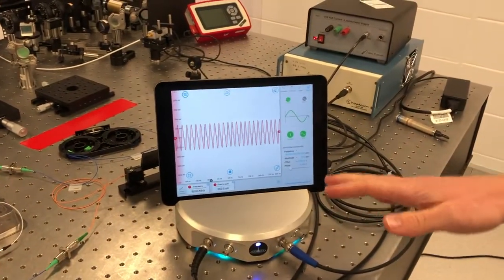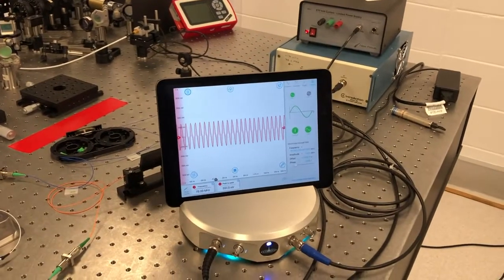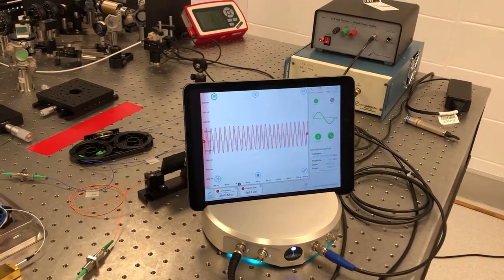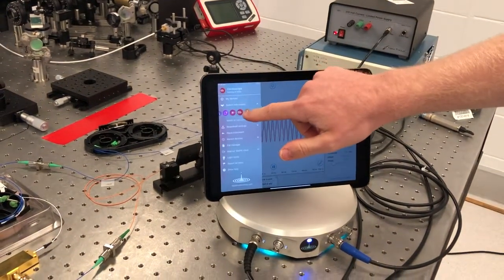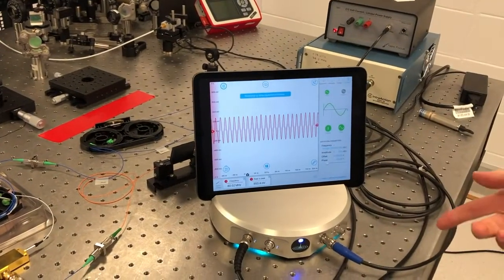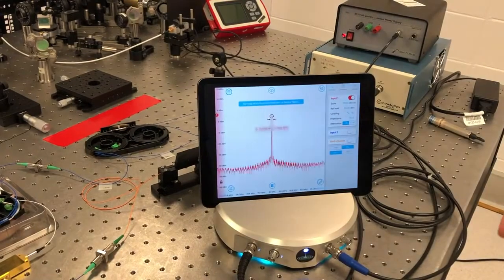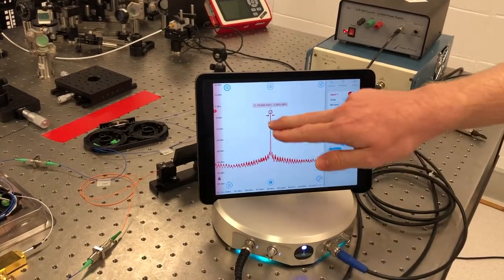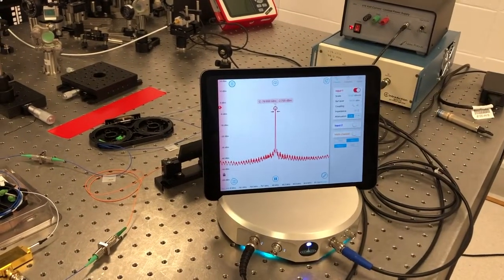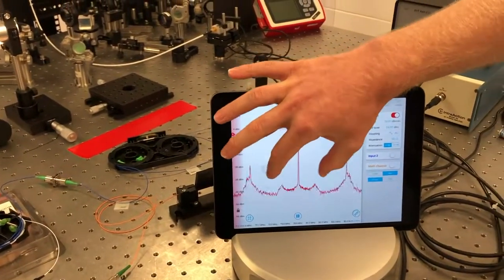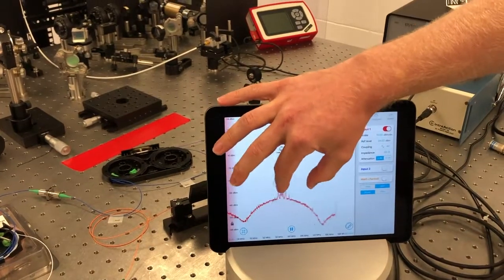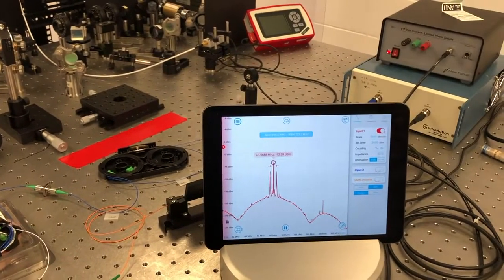Now that we've looked at the signal in the time domain, what I'm now interested in doing is just observing how it appears in the frequency domain, and so to do that, I'm just going to switch instruments to the spectrum analyzer. What I can now do is see that I've got a clear peak at 80 MHz, but I also want to see some other features around that frequency.